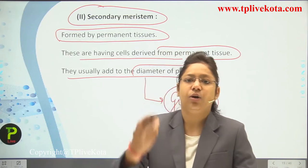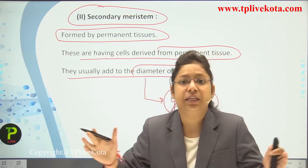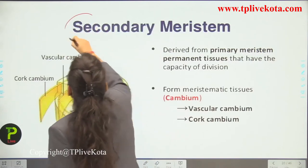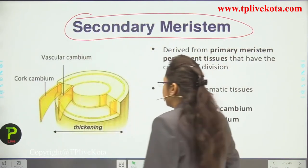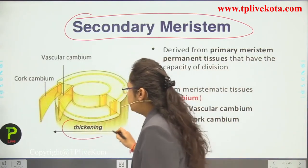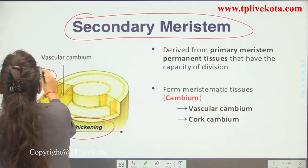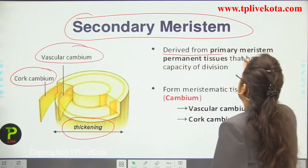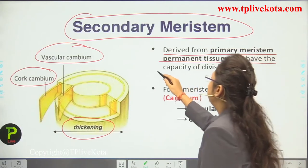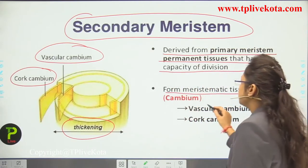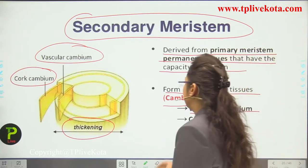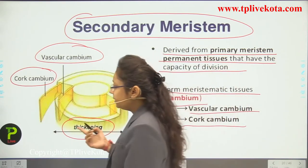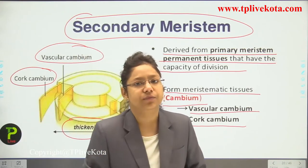Secondary meristem is not responsible for elongation but for increasing the girth, width, and diameter of the plant. Thickening of the plant is done by cork cambium and vascular cambium, which occur inside the permanent tissue. These meristematic tissues — cork cambium and vascular cambium — keep dividing, increasing the girth of the plant.